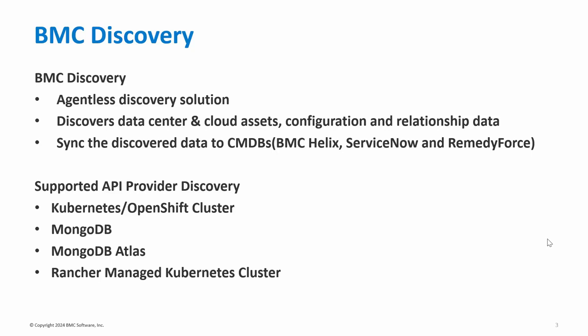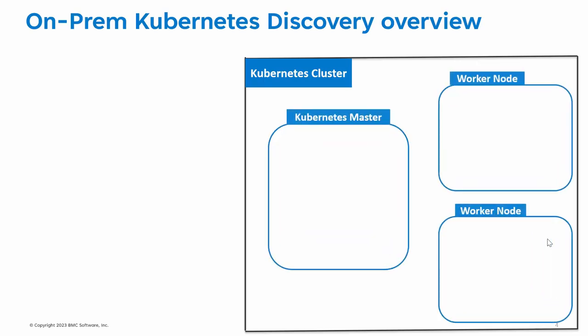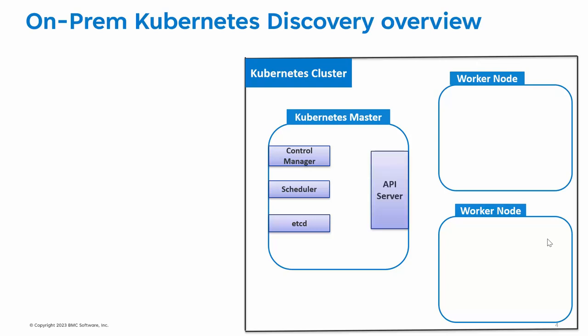Next, we will see how Kubernetes scanning works using BMC Discovery when it is deployed on-prem. Let's say you have a Kubernetes cluster with one master node and two worker nodes. The master node is responsible for cluster management and for providing the API used to configure and manage resources within the Kubernetes cluster, with the help of services such as Control Manager, which is responsible for managing the state of the cluster; Scheduler, which is responsible for scheduling pods on worker nodes; Etcd, which stores information about the cluster; and the API server which validates and configures data for API objects including pods and services.